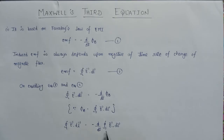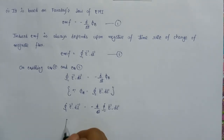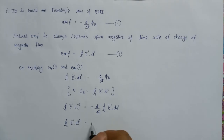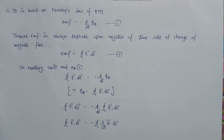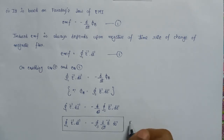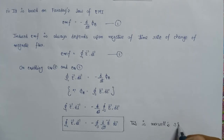After replacing the magnetic flux with this surface integral expression, if we take the d/dt inside the surface integral, we get the line integral of E dot dl equal to minus the surface integral of del/del_t of B dot dS. This is Maxwell's third equation in integral form.